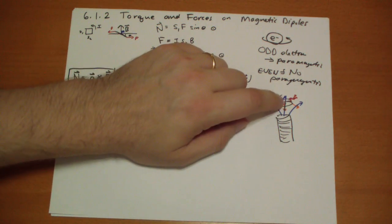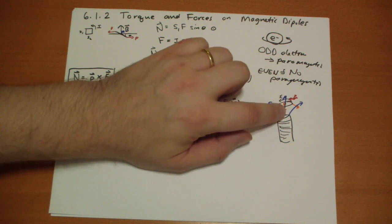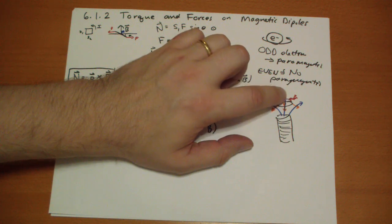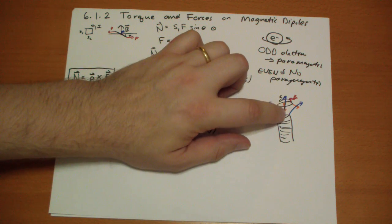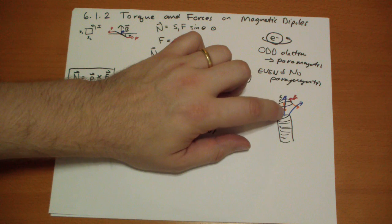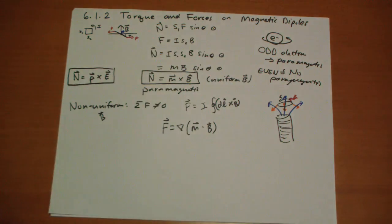Here in the middle, the dot product of the dipole moment with the magnetic field is going to increase as you move downward, because the magnetic field is stronger down there — so the dipole moment dot the magnetic field increases in that direction.